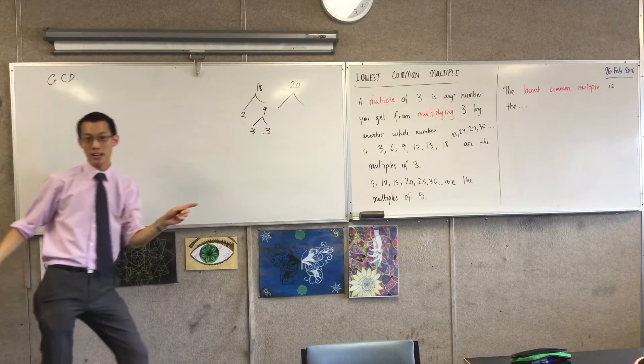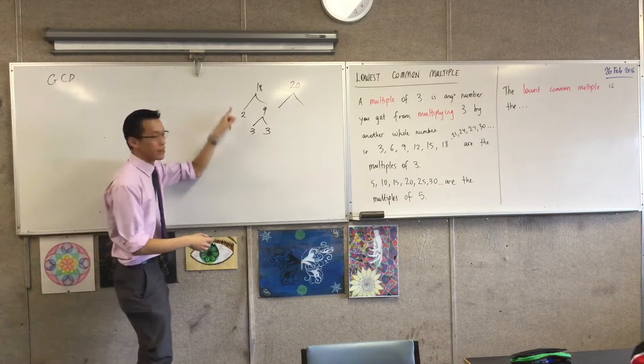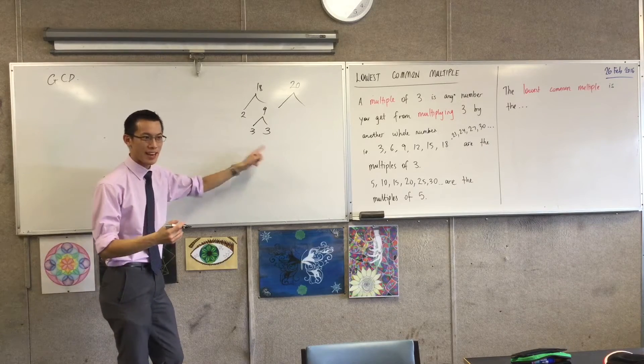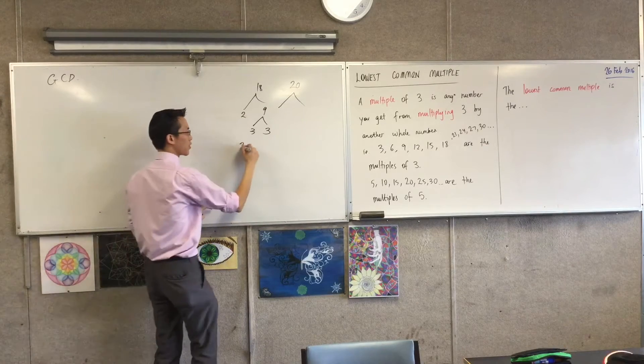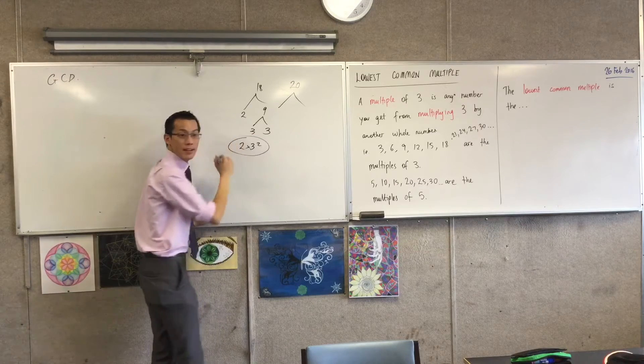And at this point, I can stop, right? Because they're all 1, 2, 3, they're all, what do we call these numbers at the end? Primes, very good. So, I've got 2 times 3 squared. Do you remember that? Okay.